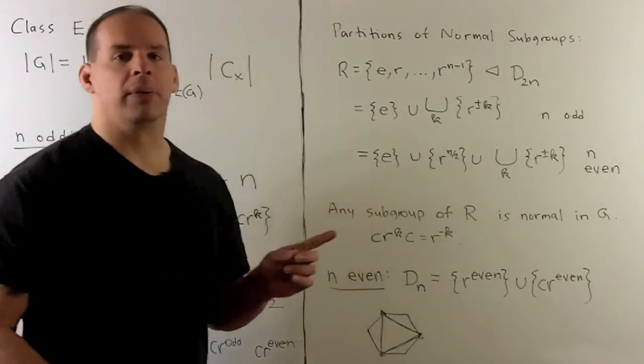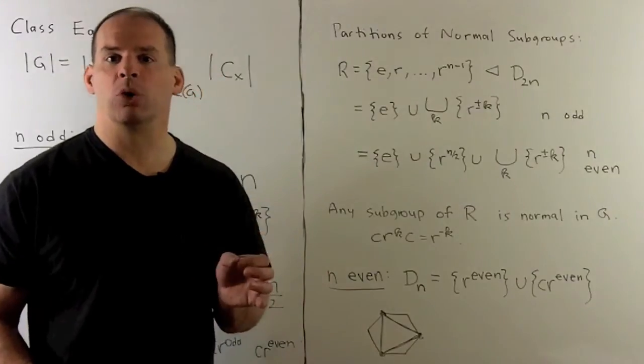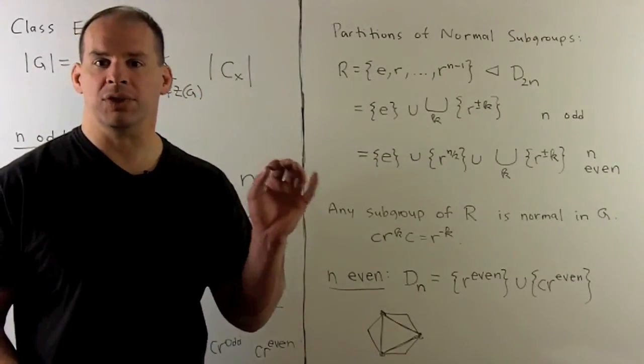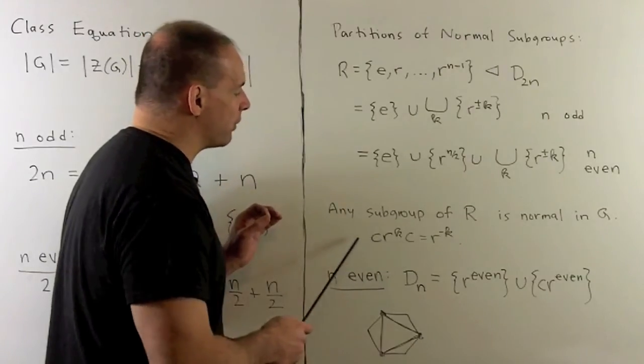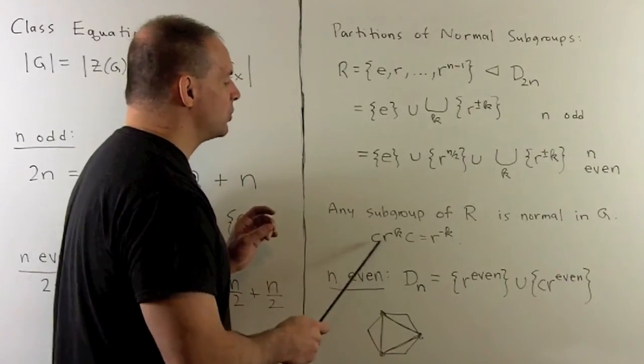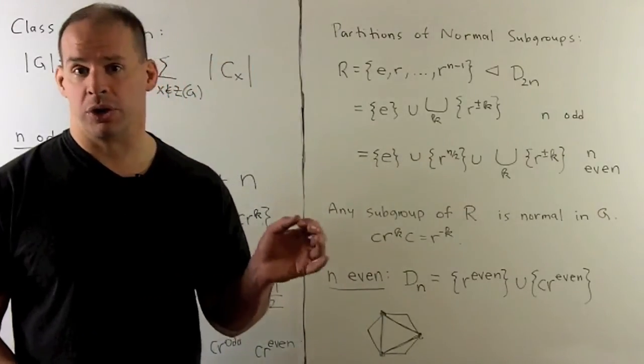It'll turn out, and I'll let you play around with it, if I take any subgroup of the rotation subgroup, that'll be normal in D 2n. That's because if I take conjugation by reflection, it's going to send each rotation to its inverse. And if I have a subgroup, it's already closed under inverses.